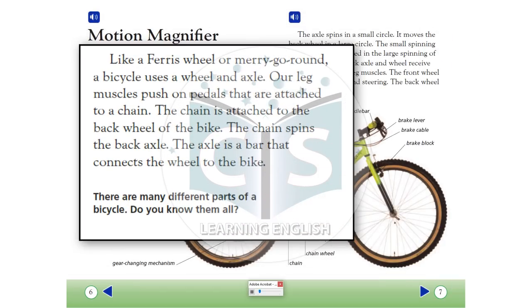Motion magnifier. Like a ferris wheel or merry-go-round, a bicycle uses a wheel and axle. Our leg muscles push on pedals that are attached to a chain. The chain is attached to the back wheel of the bike. The chain spins the back axle. The axle is a bar that connects the wheel to the bike.